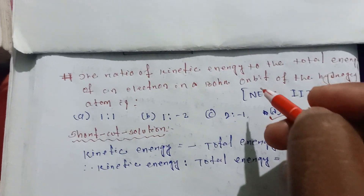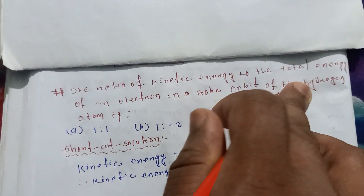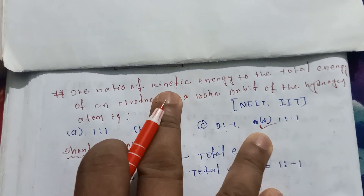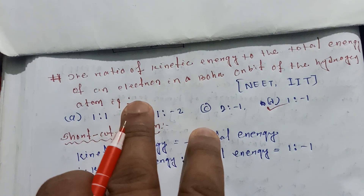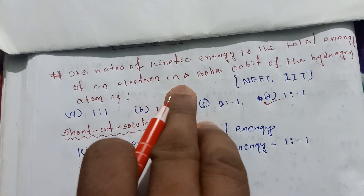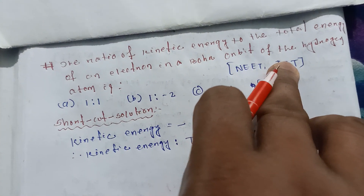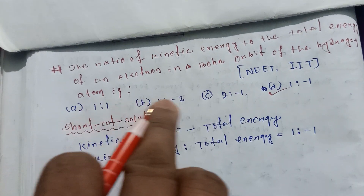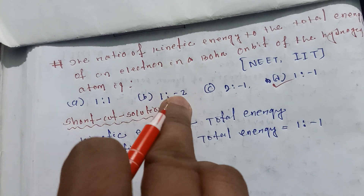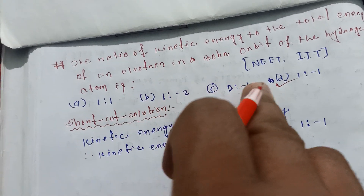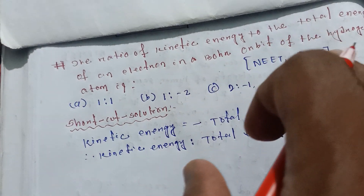The ratio of kinetic energy to the total energy of the electron in a Bohr orbit of the hydrogen atom is how much? The options are: one is to one, one is to minus two, two is to minus one, one is to minus one.